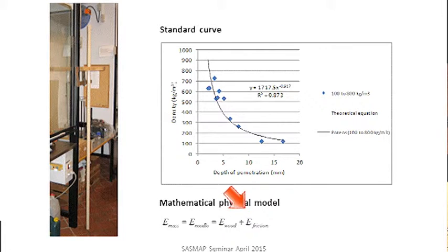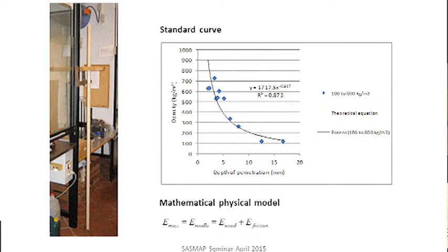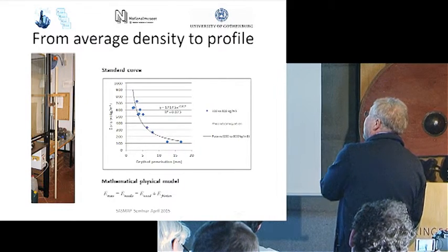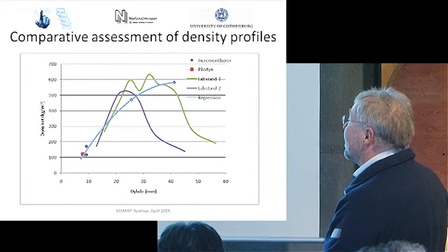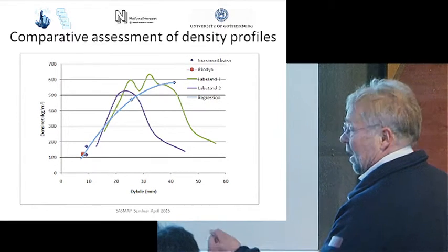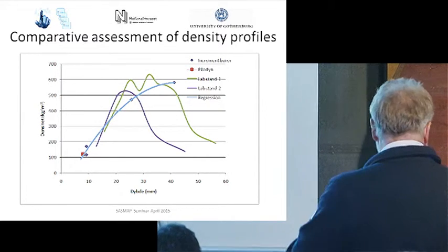In order to go from one stroke to several strokes going deep into the wood, we have to take friction into consideration, so that the energy from the mass transferred to the needle: some went to compress the wood and the rest went to friction. This is actually the difficult part — the lower the friction is, the easier it is to find out what is going on. We made comparative assessments of density profiles with the lab stand — two profiles — and measured three densities by the ordinary method, finding fairly good correlation.